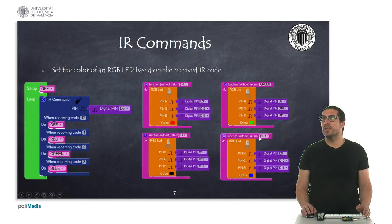And then, in this last example, what I'm going to show you is how to set the color of an RGB LED based on the received infrared code. I have created, as you can see here, four cases.